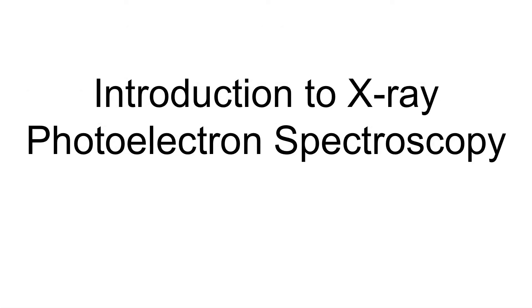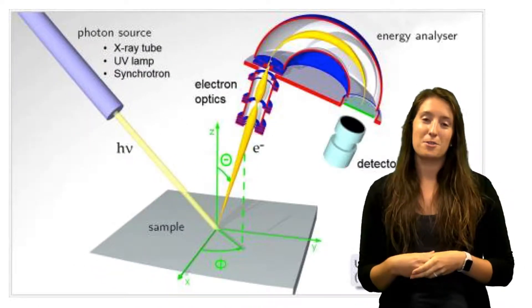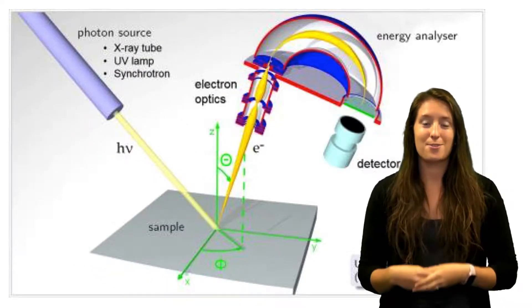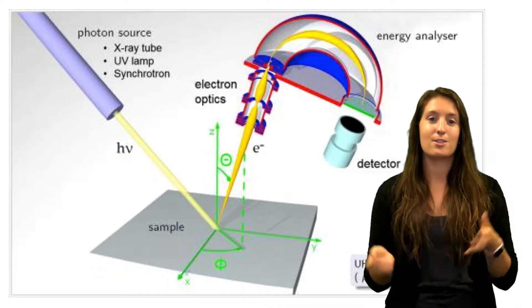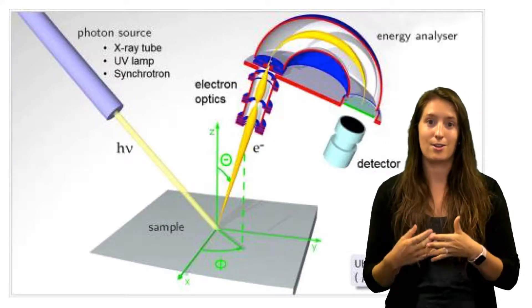This is an introduction to X-ray photoelectron spectroscopy. Photoelectron spectroscopy uses different light sources to learn about the interactions and positions of atoms and their electrons.